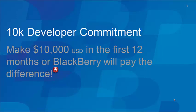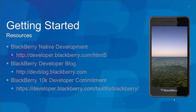Of course, terms and conditions apply, so you need to check the website to get all the terms and conditions. How do you get started? You can download all the tools at developer.blackberry.com/html5. You can also read our blog at devblog.blackberry.com, or get information about the developer commitment at developer.blackberry.com/builtforblackberry. Of course, you have my email and my Twitter, so you can always ask me questions as well.